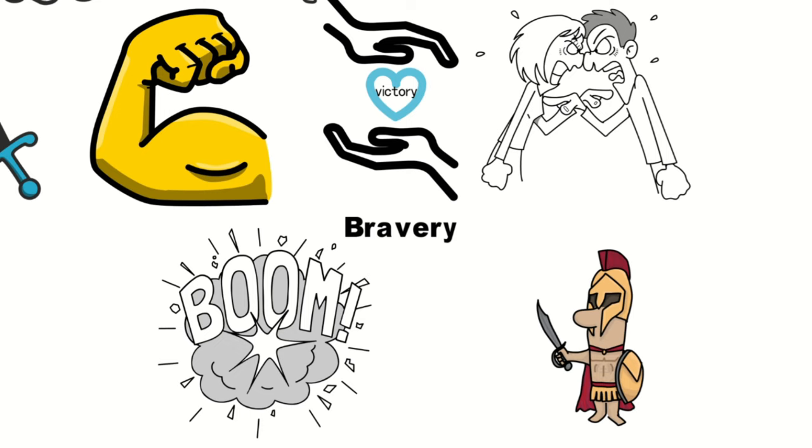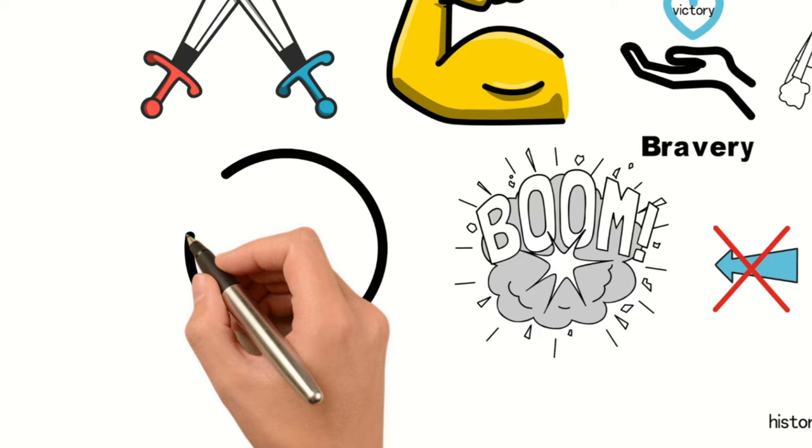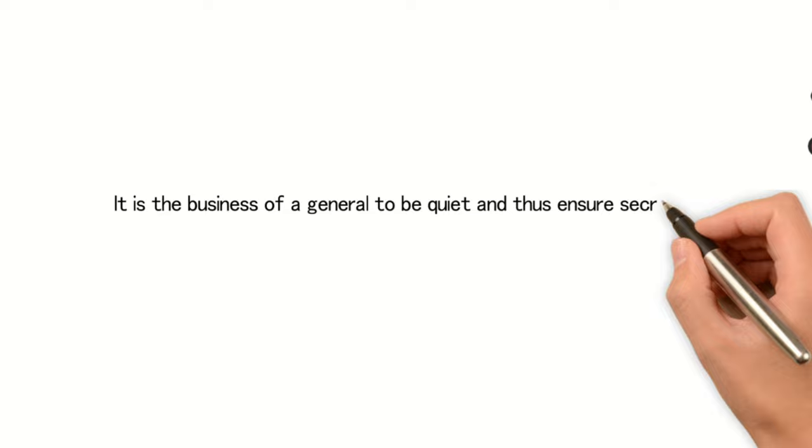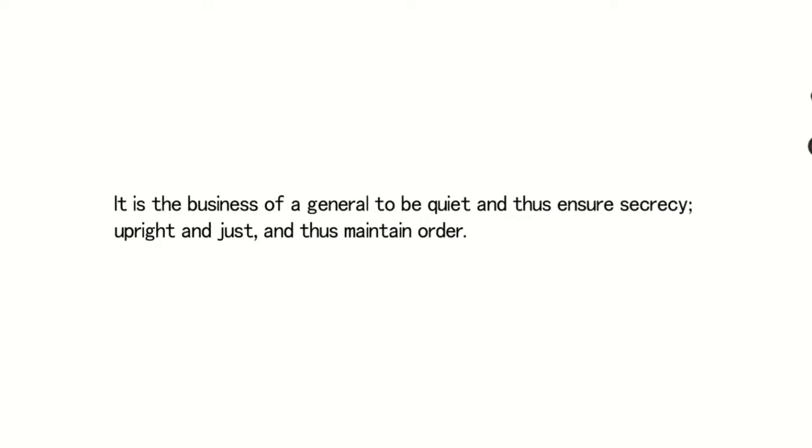Throughout his entire military philosophy, Sun Tzu emphasizes the importance of a commander's temperament. He states: It is the business of a general to be quiet and thus ensure secrecy, upright and just, and thus maintain order. The general's inner thoughts must not be revealed to others, nor should they be influenced by emotions.